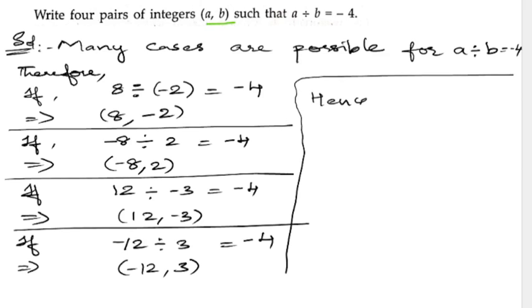Hence, the four pairs are: (8, -2), (-8, 2), (12, -3), and the last one is (-12, 3).